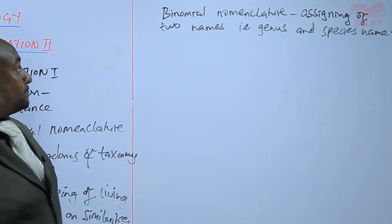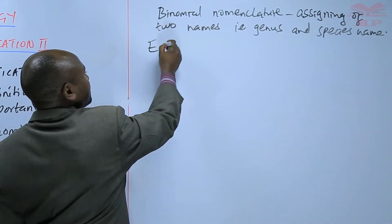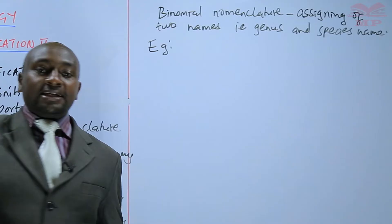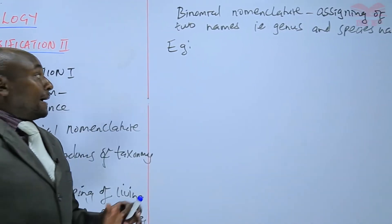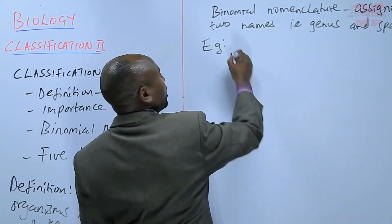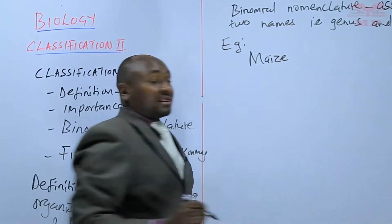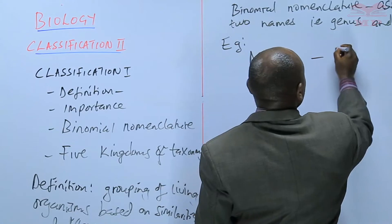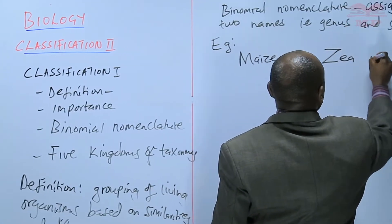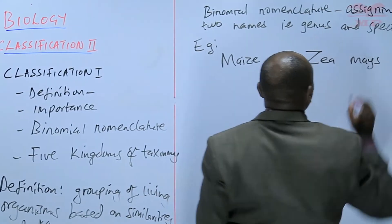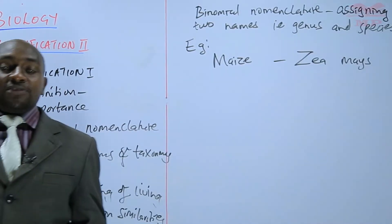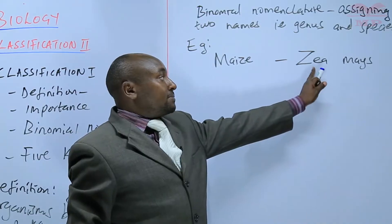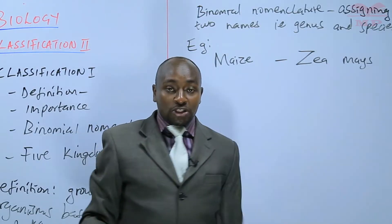I want to give an example using a very common plant, and that is maize. Maize is the common name. The scientific name for maize is Zea mays. That scientific name has two names whereby the first name is the genus name and the second name is the species name.